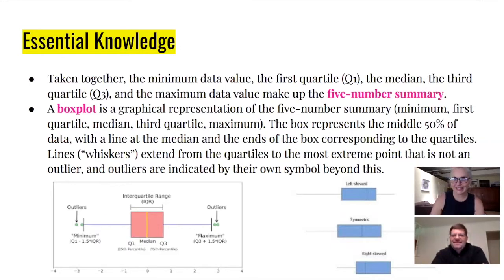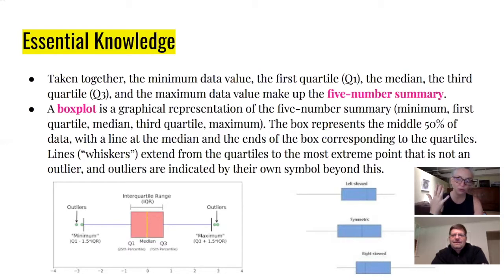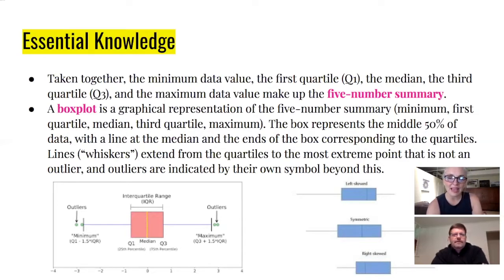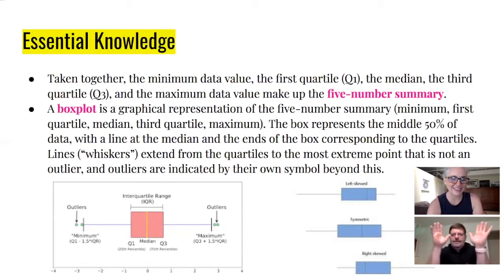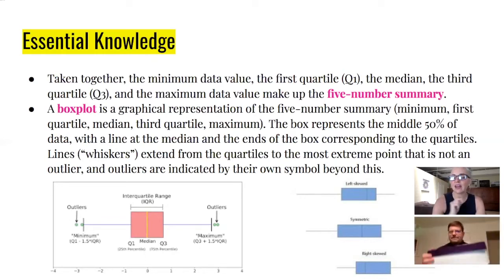In the last video we talked about minimum, maximum, Q1, median, and Q3 — that's called the five number summary. That five number summary is used to make a box and whisker plot. You've seen the box and whisker plot before; we're going to do a little bit of additional work with it.